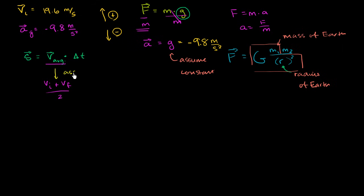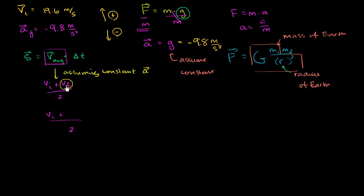We can make this assumption of constant acceleration when we're not too far from the surface of the Earth. But we don't have final velocity yet, so we need to think about this further. We can express final velocity in terms of initial velocity and time. The final velocity equals the initial velocity plus acceleration times change in time. For example, if you're starting at 10 meters per second and accelerating at 1 meter per second squared, then after a second you'll be going 1 meter per second faster.